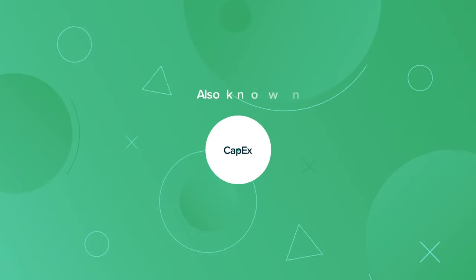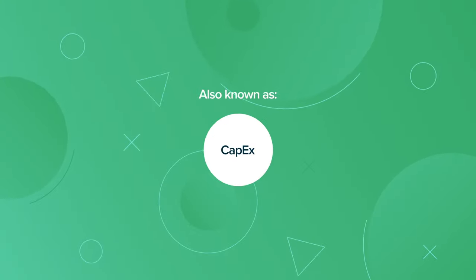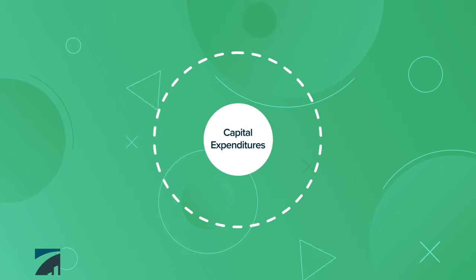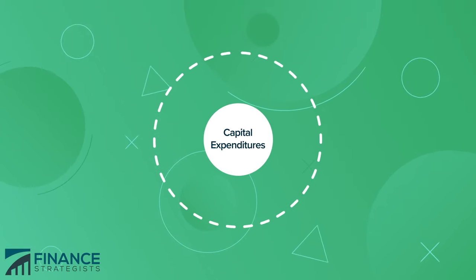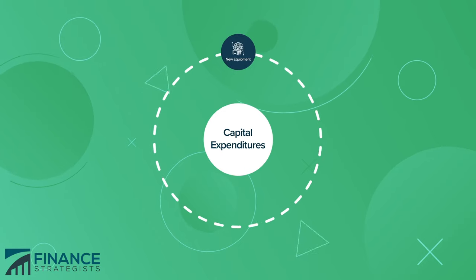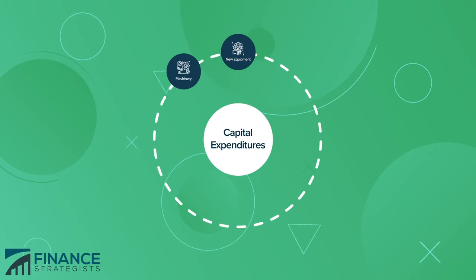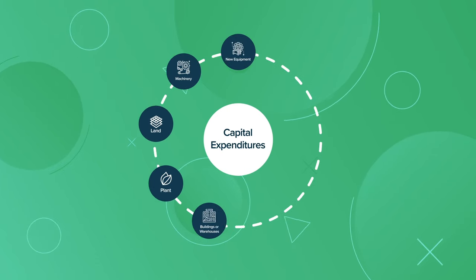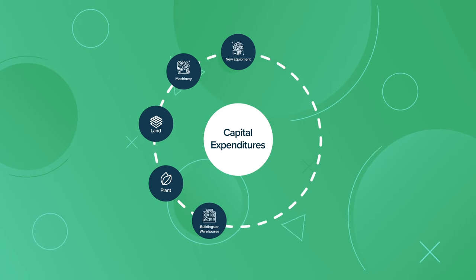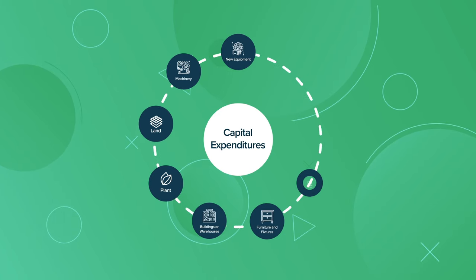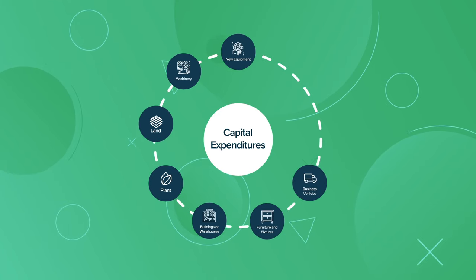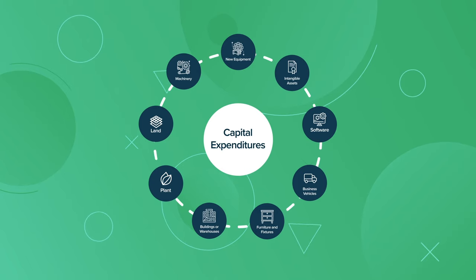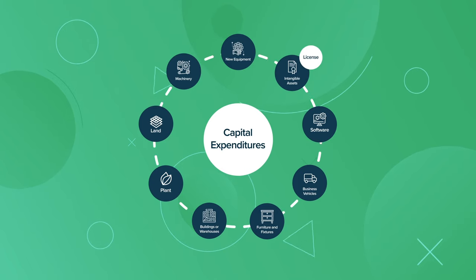Also known as CAPEX, or capital expenses, capital expenditures include the purchase of items such as new equipment, machinery, land, plant, buildings or warehouses, furniture and fixtures, business vehicles, software, and intangible assets such as a patent or license.